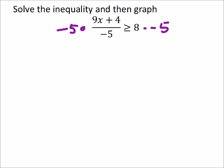Now I multiplied both sides by negative 5. That cancels these out. So now I got 9x plus 4 is greater than or equal to negative 40.